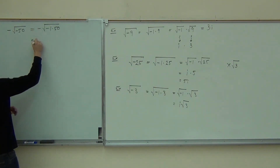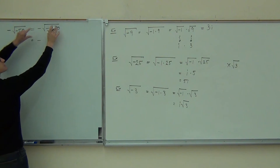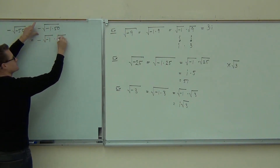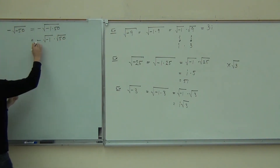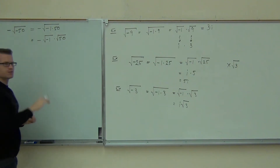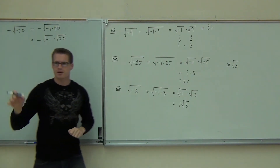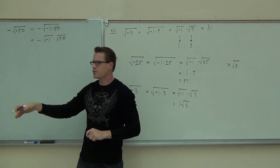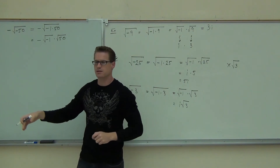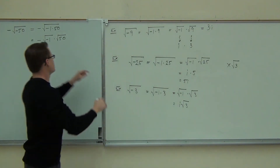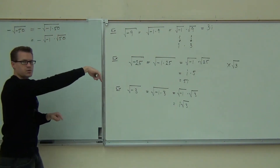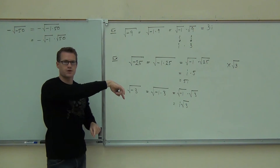So the negative stays. Let's split that up: square root of negative 1 times the square root of 50. Notice how I haven't even dealt with that negative — it's actually going to be outside of our problem the entire time. We're not even going to do anything with it. This we just split up like we've done in the previous problems.